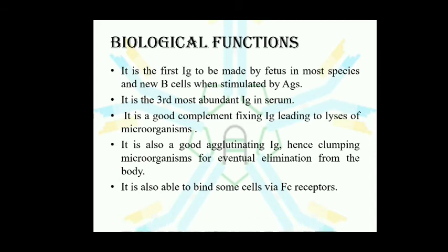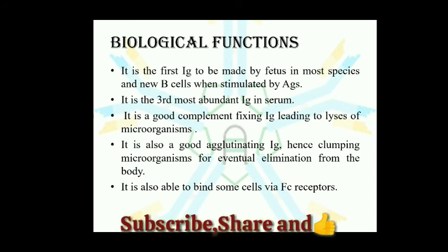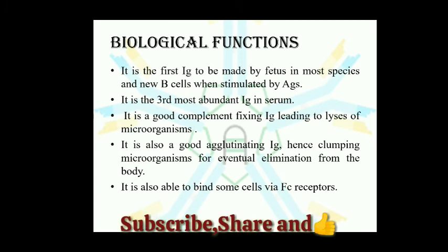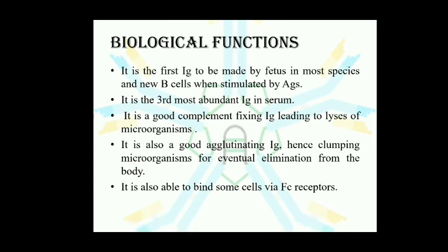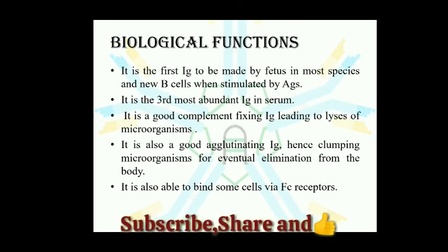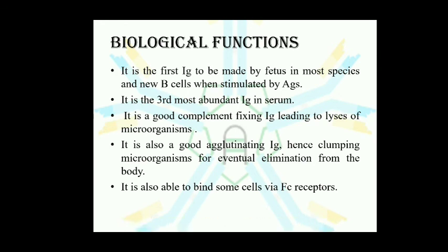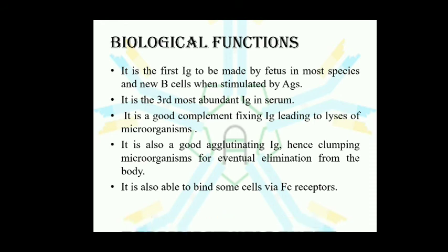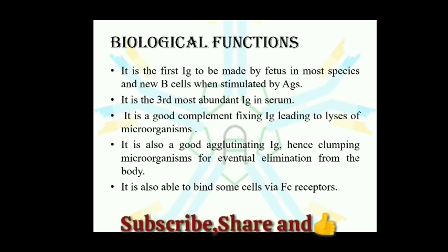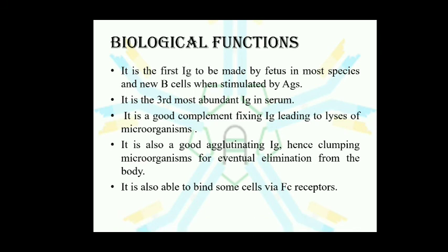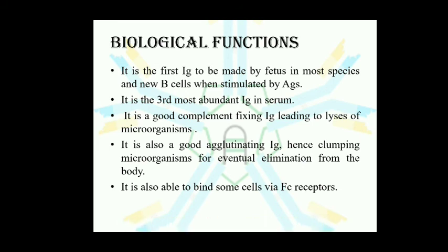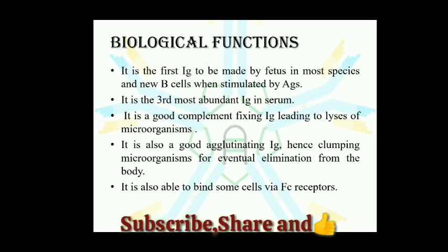Regarding the biological functions of IgM antibodies: IgM is the first immunoglobulin synthesized by the fetus in most species, and new B cells when stimulated by antigens produce IgM, giving the primary immune response and primary resistance to newborns. It is the third most abundant immunoglobulin in serum. Due to its large size and good antigen valency, it has strong complement-fixing ability, leading to lysis of microorganisms. In its pentameric form, it shows good agglutination — clumping of microorganisms for elimination from the body.